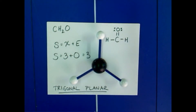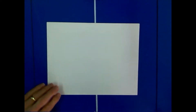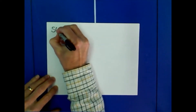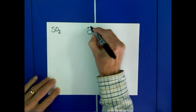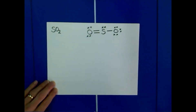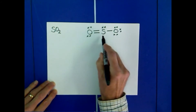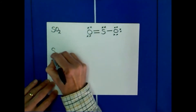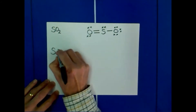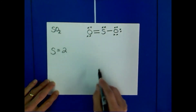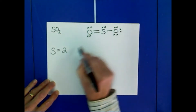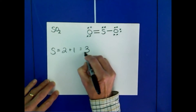There's another case that can exist for a steric number of 3. For example, we can look at the molecule SO2, sulfur dioxide. If we draw the Lewis structure for sulfur dioxide, it looks something like this. If we calculate the steric number for the sulfur, that's the number of atoms attached to our central atom, which is 2, plus the number of lone pair electrons on the sulfur, which is 1. That also gives us a steric number of 3.